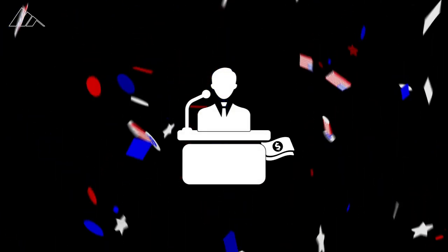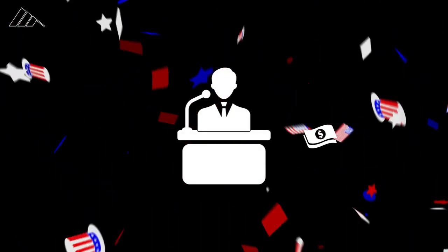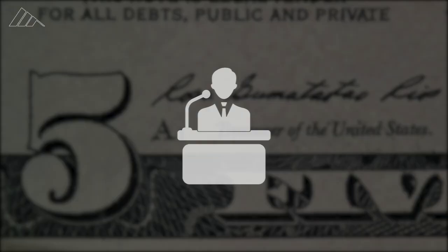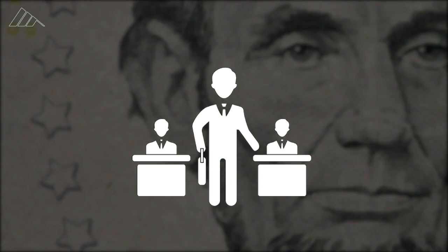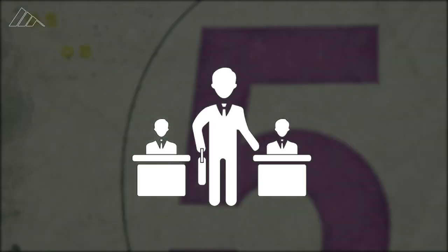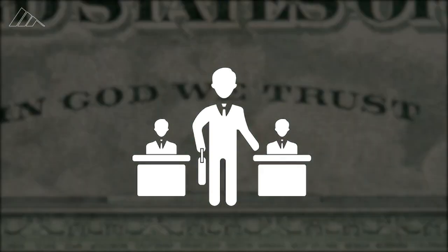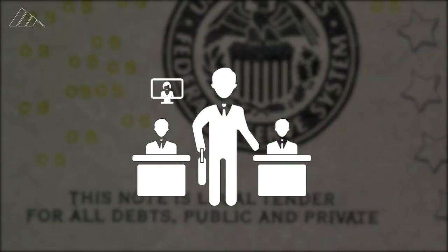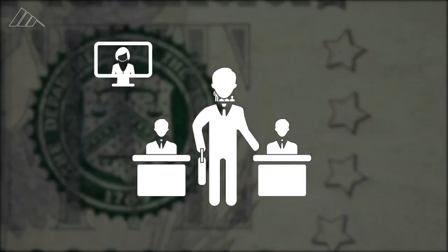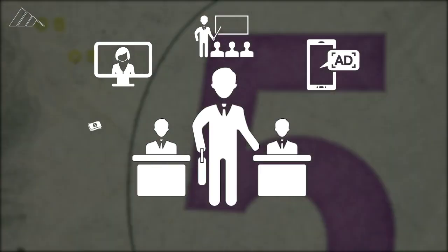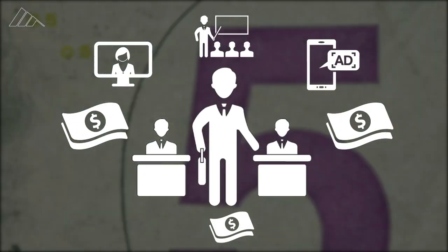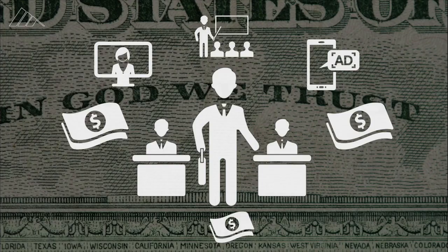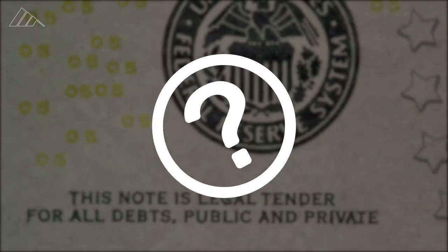Running a campaign for any office is expensive. A major candidate's campaign and their allied groups can spend tens of millions of dollars on commercials, conducting polls, running ads, and paying for other expenses during a single election cycle. But where does all that money come from?